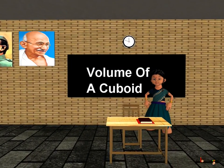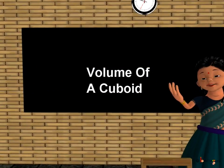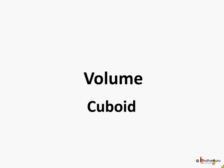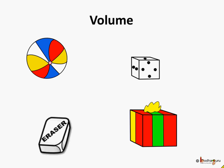Good morning children. Now we shall learn how to calculate the volume of a cuboid. So, what is volume? Now we know all things, be it a ball or a dice or an eraser or a gift box, all need space. And the amount of space which any object or a solid shape takes is called its volume.